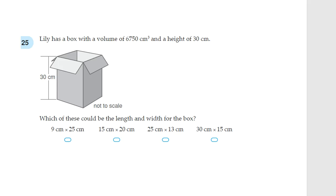Question 25. Lily has a box with a volume of 6,750 centimetres cubed and a height of 30 centimetres. Which of these could be the length and width of the box? So, we should know that volume equals length times width times height. So, let's fill this in. We know that the volume is this much. We don't know the length or the width. But, we do know the height. So, we need to figure out what is this? Because, that's what the question is asking.